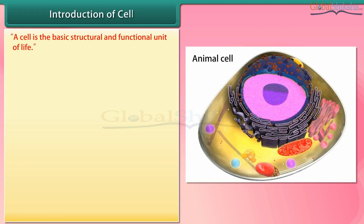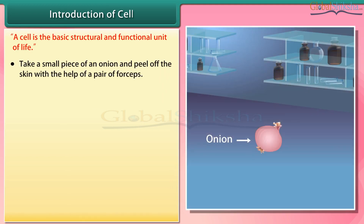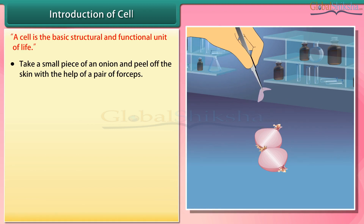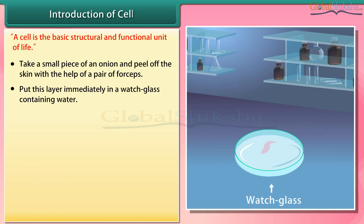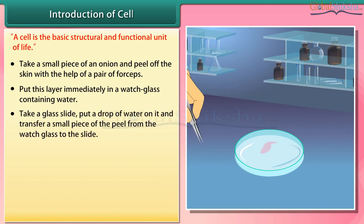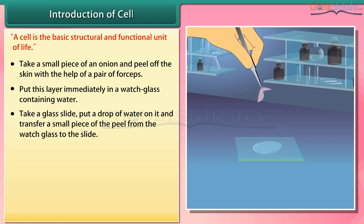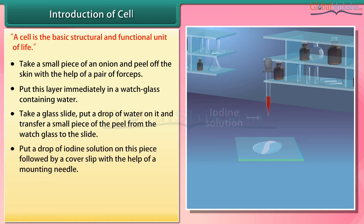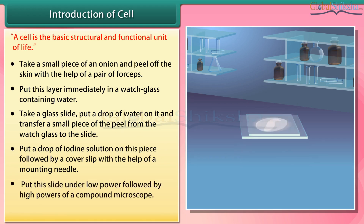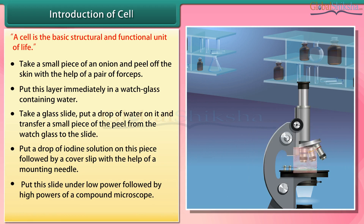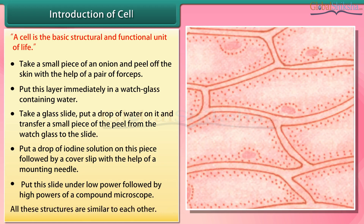A cell is the basic structural and functional unit of life. Experiment: Take a small piece of an onion and peel off the skin with the help of a pair of forceps. Put this layer immediately in a watch glass containing water. Take a glass slide, put a drop of water on it, and transfer a small piece of the peel to the slide. Put a drop of iodine solution on this piece followed by a cover slip, and observe under low and then high power of a compound microscope.